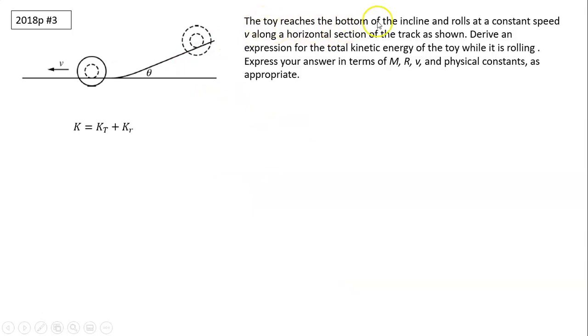Now the toy reaches the bottom of the incline and rolls at constant speed V along the horizontal section of the track. As shown, derive an expression for the total kinetic energy of the toy while it is rolling. Express your answer in terms of M, R, V and physical constants as appropriate. So we know the total energy is translation plus rotation. So translation is one-half MV squared. Again, total M is 3M.